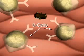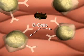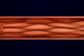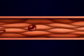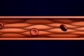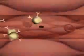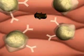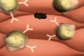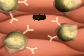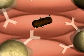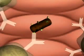B cells are one of the two types of white blood cells that make antibodies. When a bacterial cell enters the bloodstream, proteins on its surface act as antigens and trigger a response by the immune system. These antigens will bind to the unique B cells that have the corresponding antibodies on their surfaces.